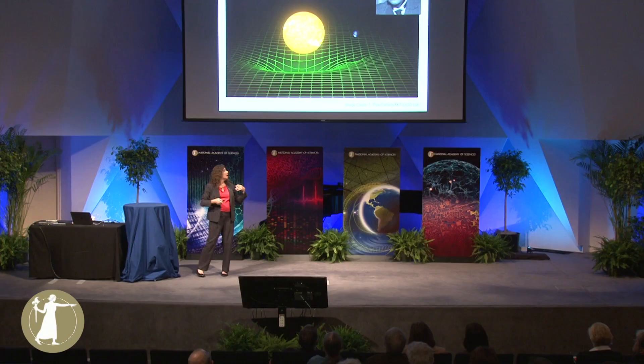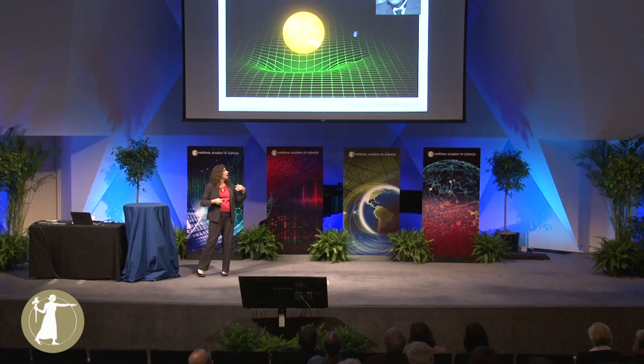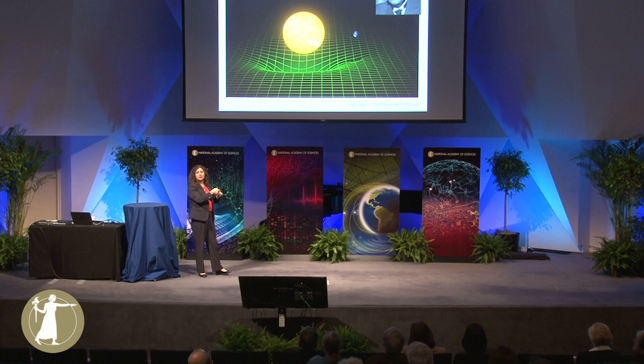What masses do according to Einstein is deform that space-time, and the Earth then goes around the Sun not because there is this force of gravity, but because it sees the distortion of space-time and follows the shortest path, which is a curved path in space-time.